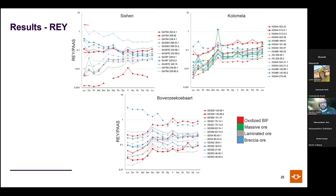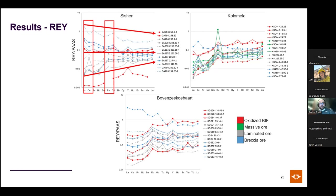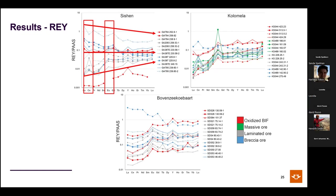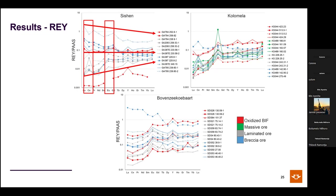A light-over-heavy rare earth element shift is not a smoking gun for supergene processes, as other processes could also be at play. At Sishin, a wide array of REY patterns is seen and heavy rare elements have been more strongly leached than light ones. In thin sections, phosphates — specifically xenotime, a heavy rare earth phosphate — are literally dumped out in the oxidized BIF below the high-grade ore at Sishin.